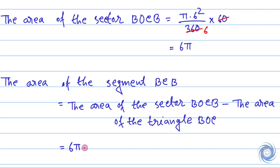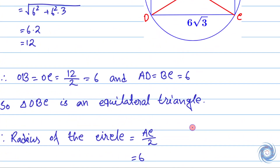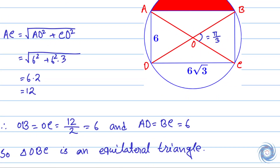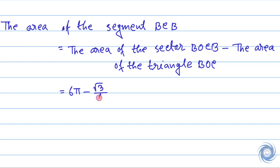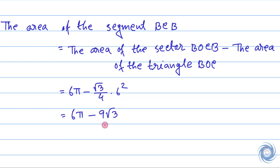Now we need the area of the triangle BOC. Since BOC is an equilateral triangle with side 6 units, the area of triangle BOC is given by root 3 over 4 times 6 squared, which gives 9 root 3. Therefore, the area of segment BC is 6π minus 9 root 3.